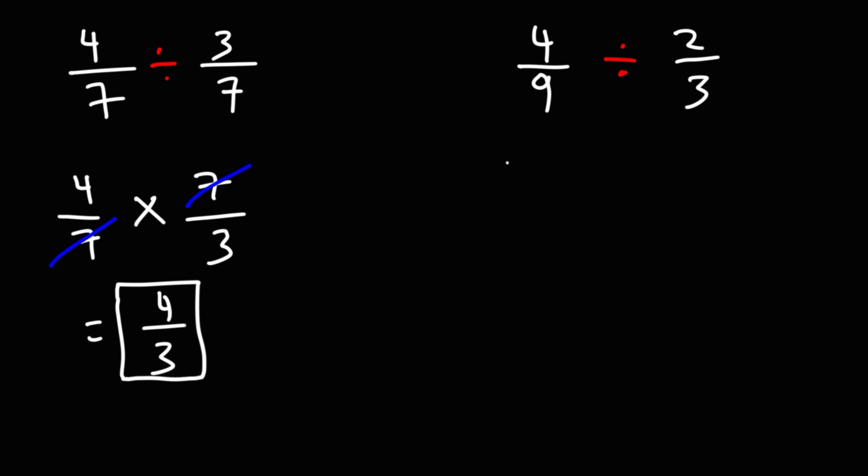For the second problem, we'll use keep change flip, we'll keep the first fraction the same, change division to multiplication, and flip the second fraction. So now we can multiply across. 4 times 3 is 12, 9 times 2 is 18.